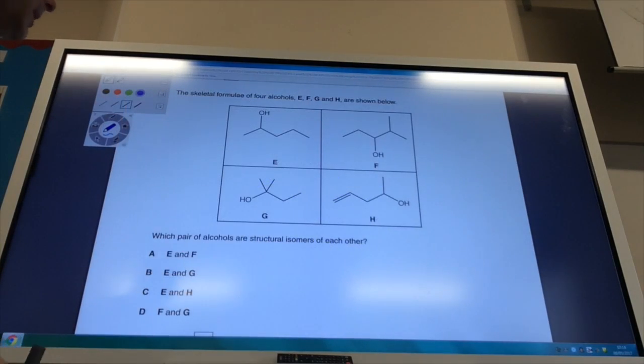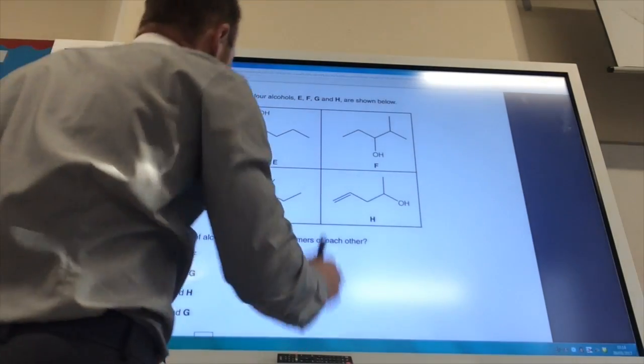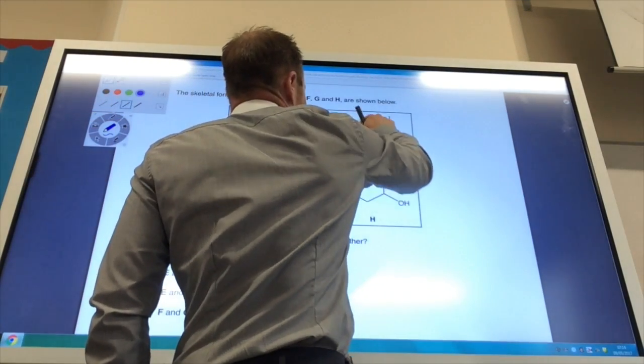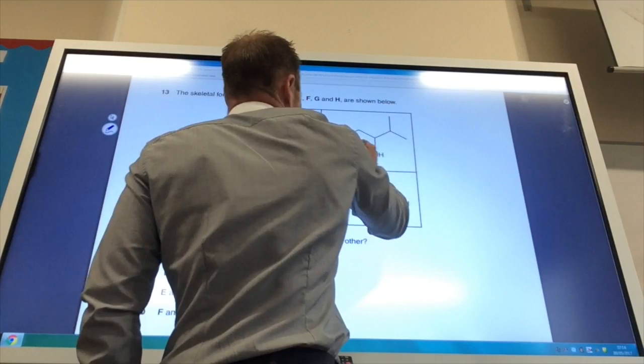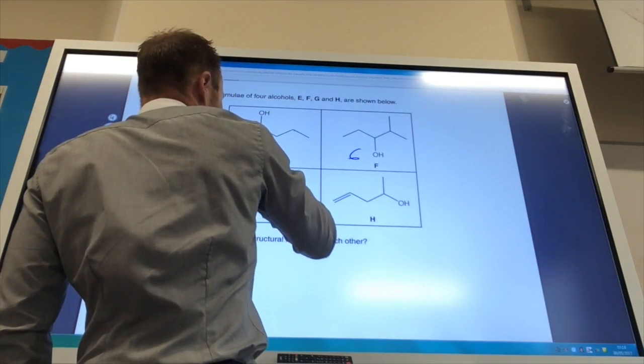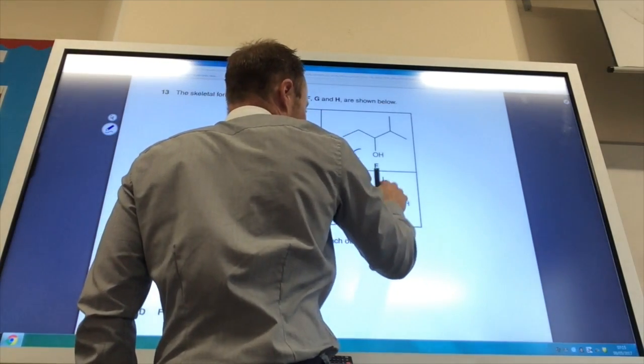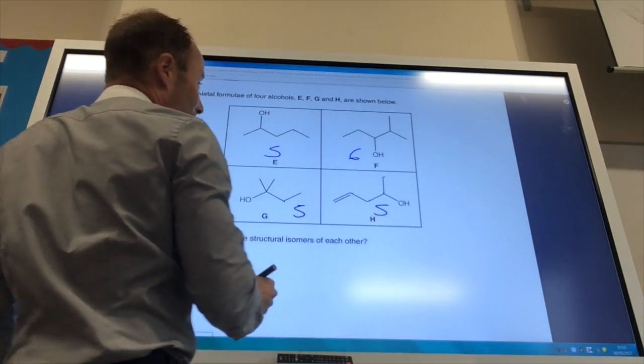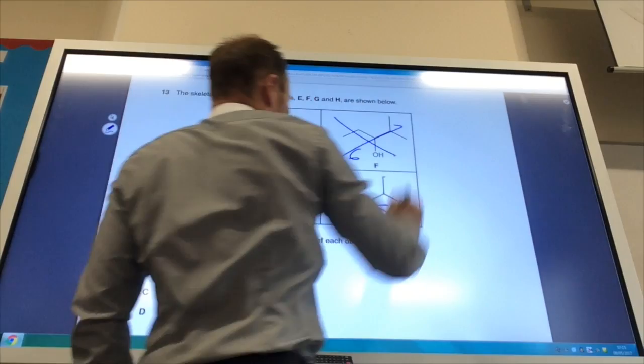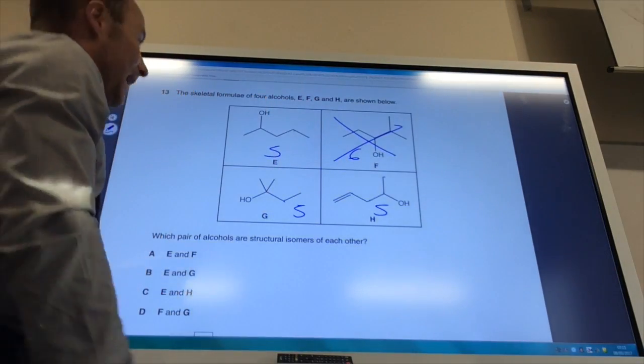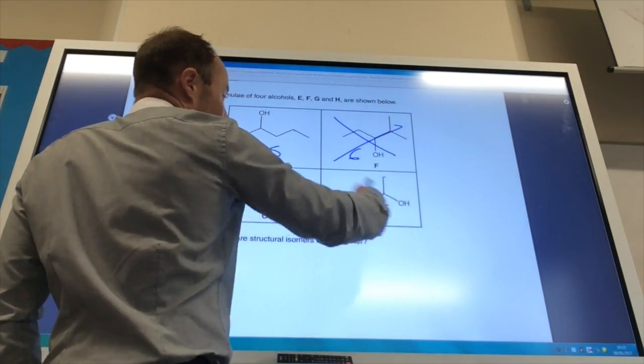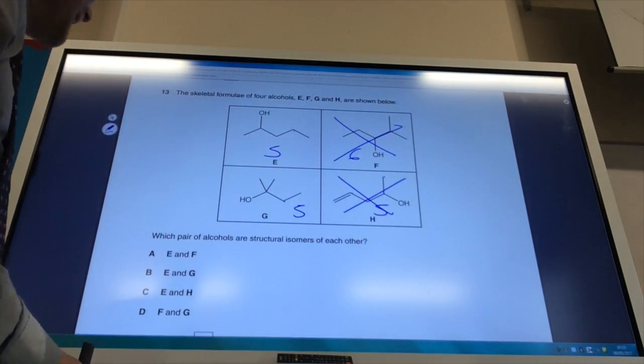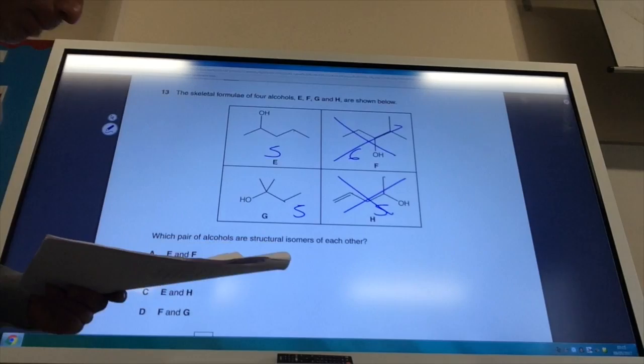It's spot the isomer time. Let's count some carbons up. That's got five carbons. One, two, three, four, five, six. One, two, three, four, five. One, two, three, four, five. It can't be that one because that's got six and the other's got five. If you have a look at it, this is unsaturated, so the number of hydrogens can't be the same, so it can't be that one. It must be E and G. The answer to that is B.